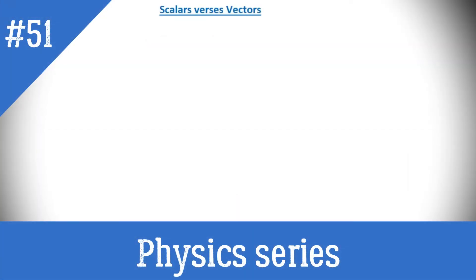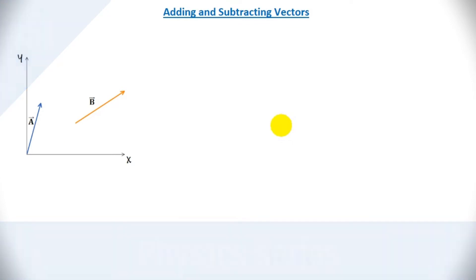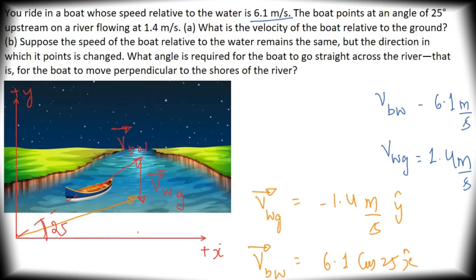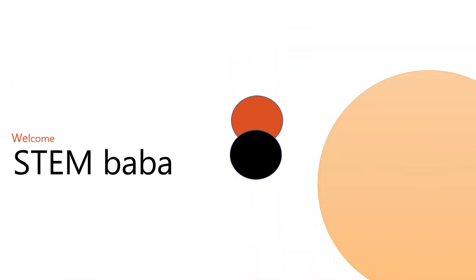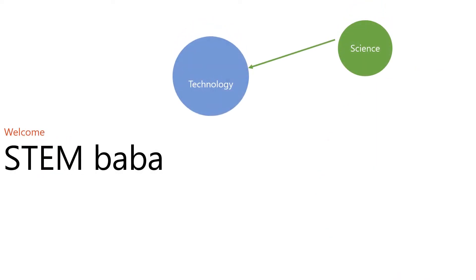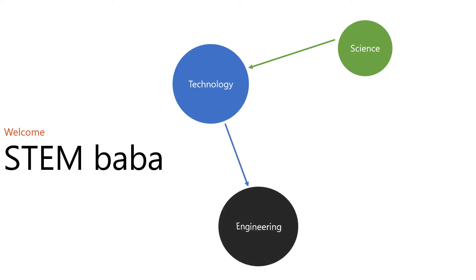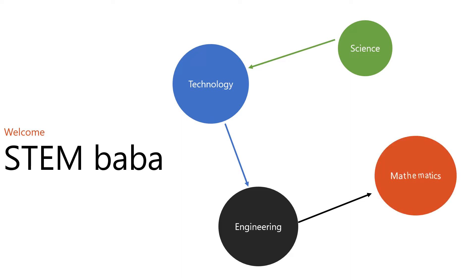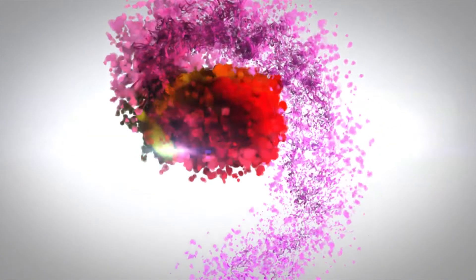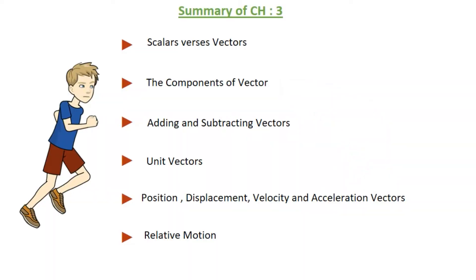In this video we will be discussing the summary for chapter 3. After this video we will be taking questions from the book James S. Walker for chapter 3. The topics we discussed include scalar and vectors, component of a vector, how to add and subtract vectors, unit vectors, and relative motion. I will be taking all these topics one by one, but before that let me take one question based on relative motion from the previous video.